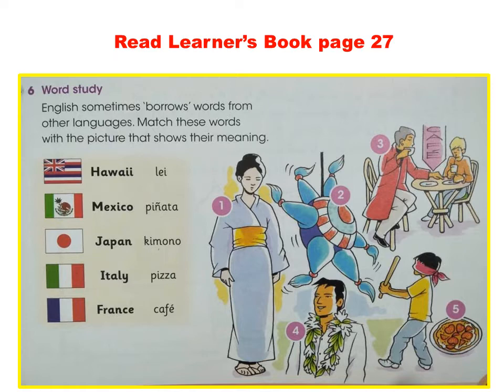Kimono comes from Japan. Pizza comes from Italy. And also coffee comes from France.